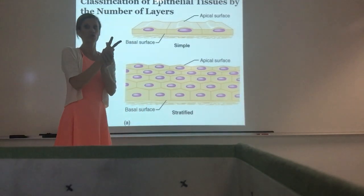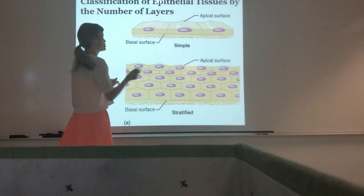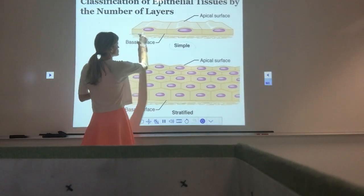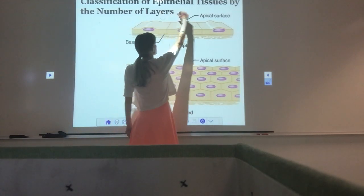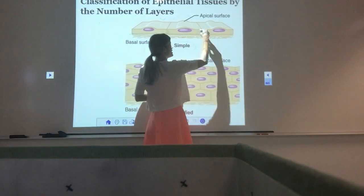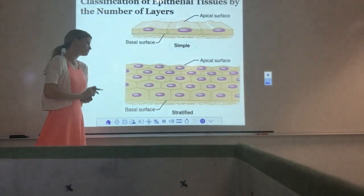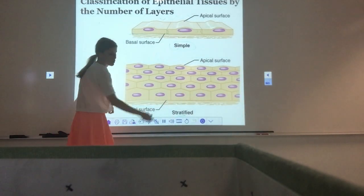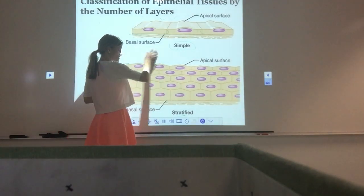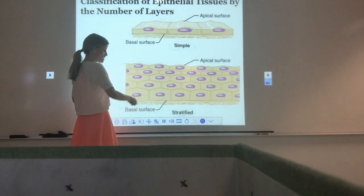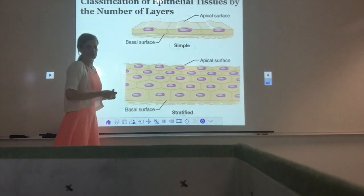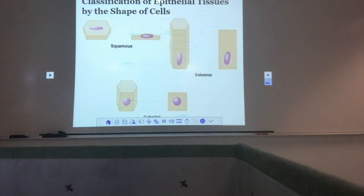Once you know it's epithelial tissue, ask: how many layers of cells, and what shape are they? If there's one layer of cells, we say it's simple — simple means one layer. The basal surface is on the bottom, the apical surface is on top, and there's one zone of cells. Stratified means there are multiple layers — you can see layers stacked on top of each other, one, two, three, four, five layers. Next, look at the shape of the cell.